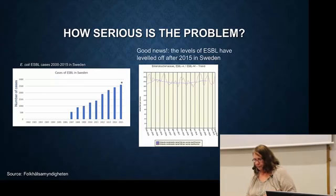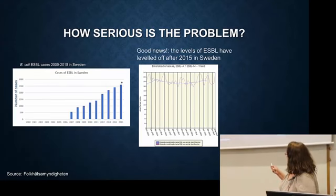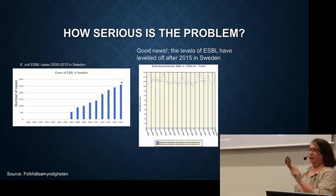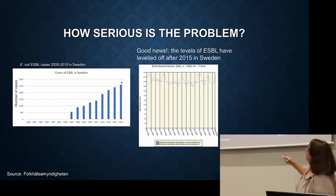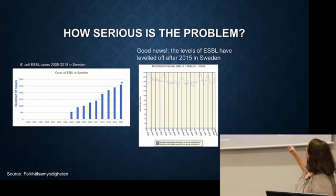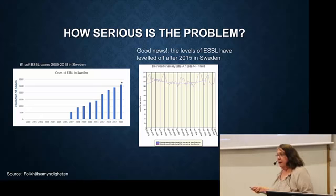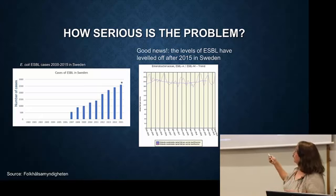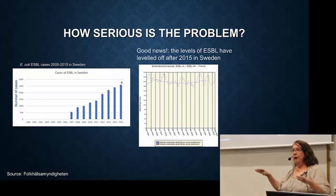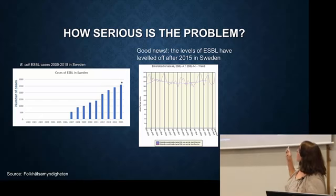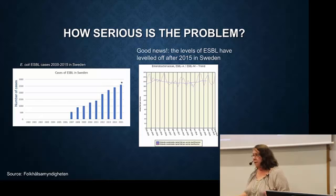Another piece of good news: this graph I showed a few minutes ago is ESBL in Sweden. Since 2015, it's a straight line — in other words, it didn't keep going up and up as the earlier trend implied. The rise of this superbug has actually leveled off in Sweden, and this is due to a lot of different changes in treatment and policies. So things like this are getting better sometimes, but in some countries.